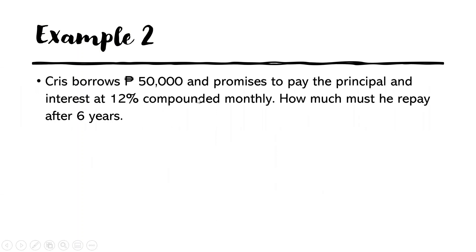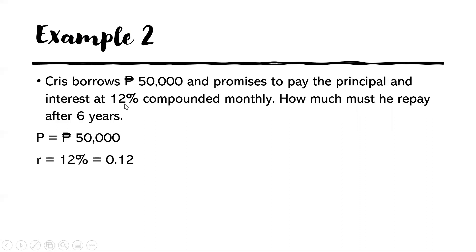Example two: Chris borrows P50,000 and promises to pay the principal and interest at 12% compounded monthly. How much must he repay after six years? We are asked to solve for the future value. The principal is P50,000, the rate is 12% or 0.12 in decimal, N is 12 because this is compounded monthly — meaning interest is given 12 times in a year — and the time is six years.